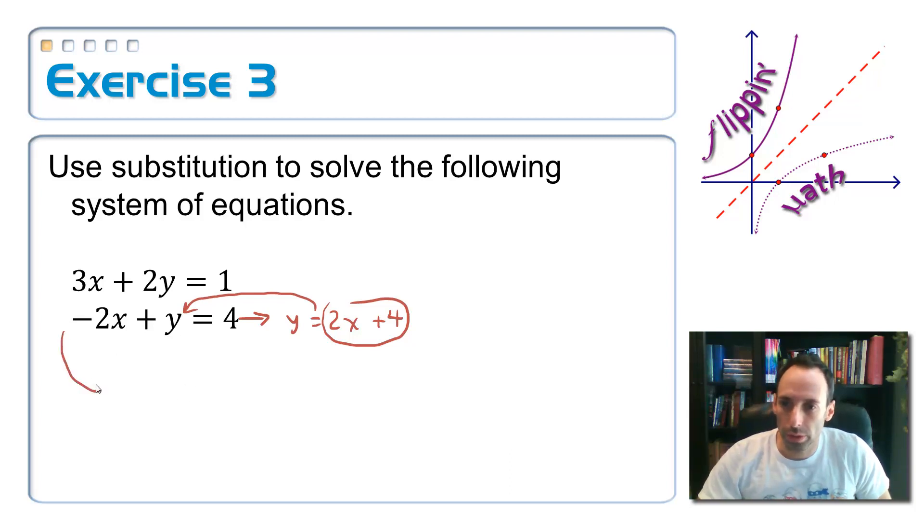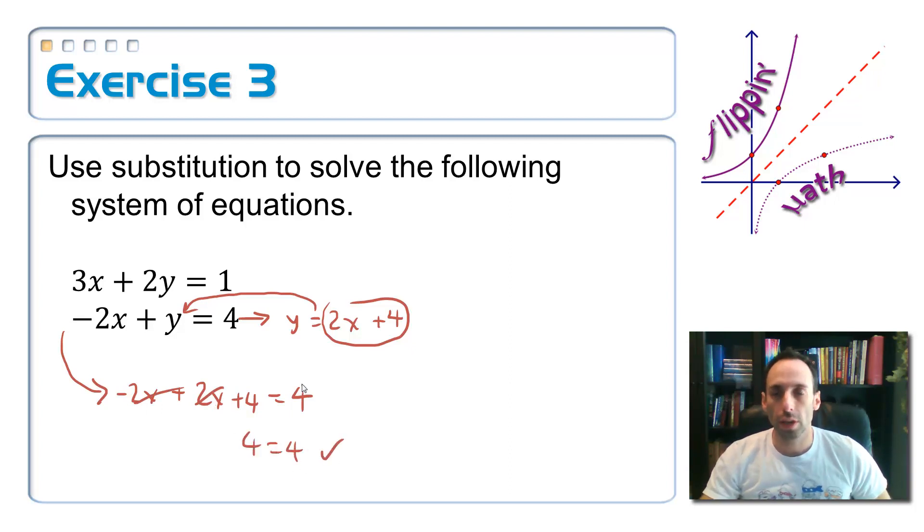So again, I solve this one for y and I get 2x plus 4. So let's take this 2x plus 4, stick it in for y into the same equation. So I have a negative 2x plus I'm taking this y out and sticking in 2x plus 4 in its place equals 4. Now watch the crazy stuff that happens. The negative 2 and this positive 2x, they cancel out and I get 4 equals 4. That's a true statement.